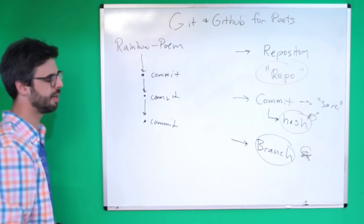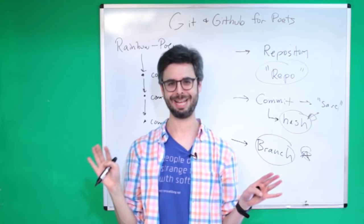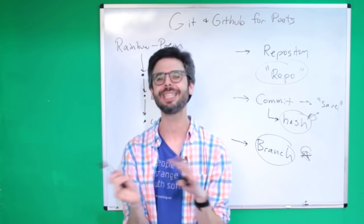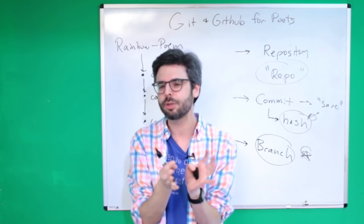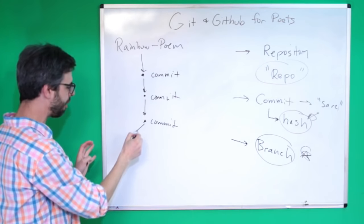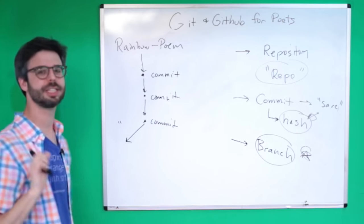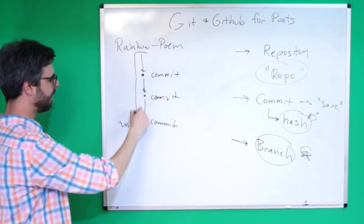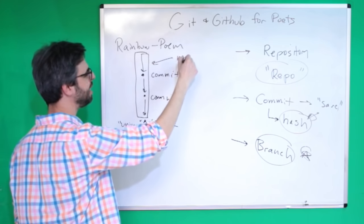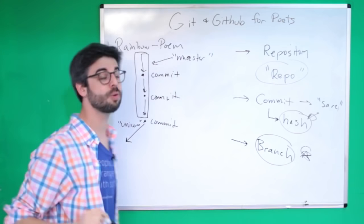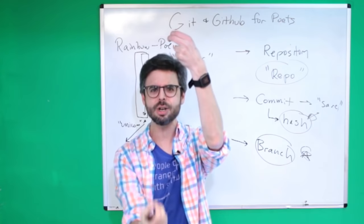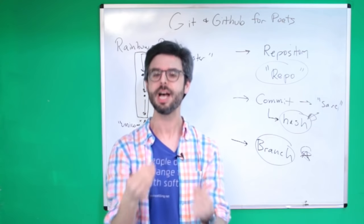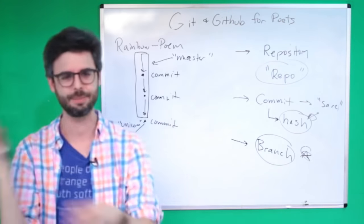What if I had an experimental idea I wanted to add to my poem but wasn't sure I wanted to keep? I want to branch off and try an experiment where the poem is also about a unicorn. By default, the main linear list of commits is on the master branch — think of it as the root of your tree. It's named master by default, though you can change it.